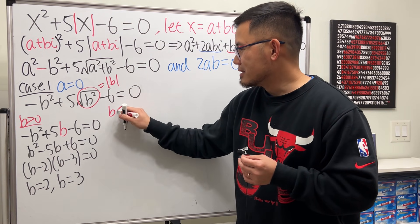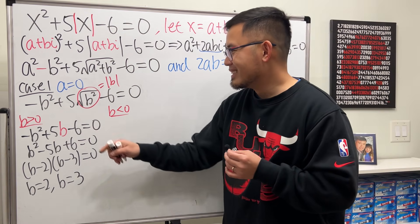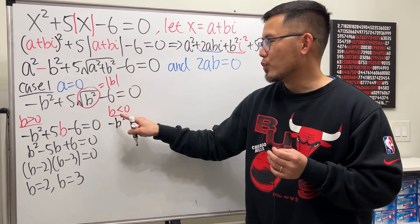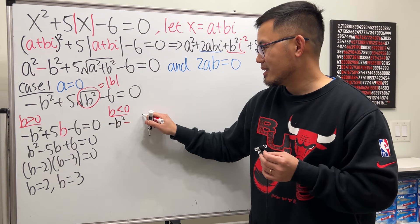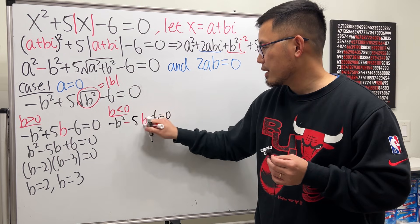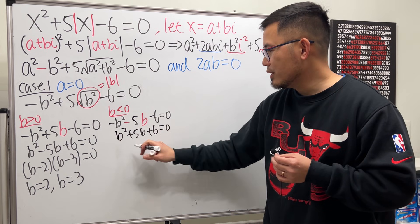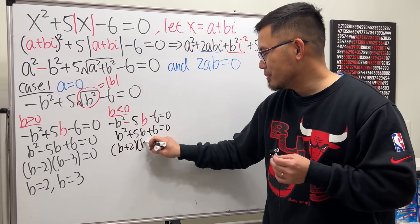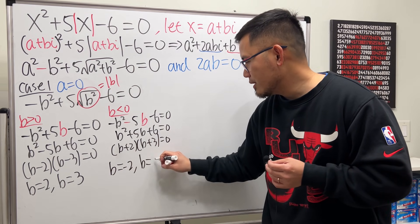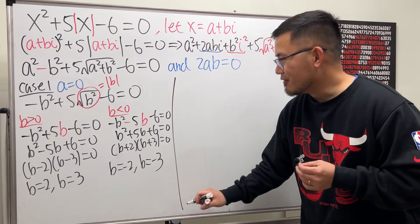second case, b is less than 0. I will tell you. You will just get negative 2 and negative 3, but let me show you. So this states, negative b squared, but absolute value of b, when b is less than 0, we will get negative b. And then we still have the 5, and then minus 6. That's equal to 0. All right. Divide everybody by negative. b squared plus 5b plus 6 equal to 0. Factor it, b plus 2 times b plus 3. So that means b is negative 2 or negative 3. All right. Plus minus 2, plus minus 3. All right. So that's the first case. Now,